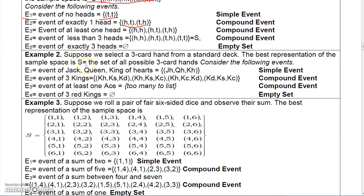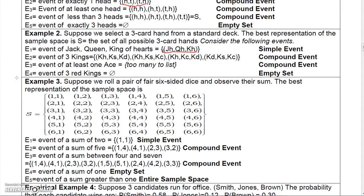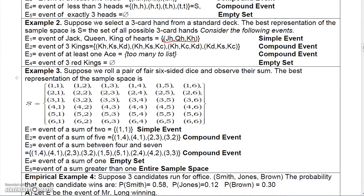If we take a three-card hand from a deck, I'm not going to list all the possible three-card hands, but that would be the sample space. If I was interested in getting the jack, queen, and king of hearts, there's only one way to get that — so it's a simple event. If I wanted the event of getting three kings, there are several ways, so that would be a compound event. At least one ace would also be a compound event — there are many ways to get at least one ace. The event of three red kings would be the empty set, because there are only two red kings in a deck.